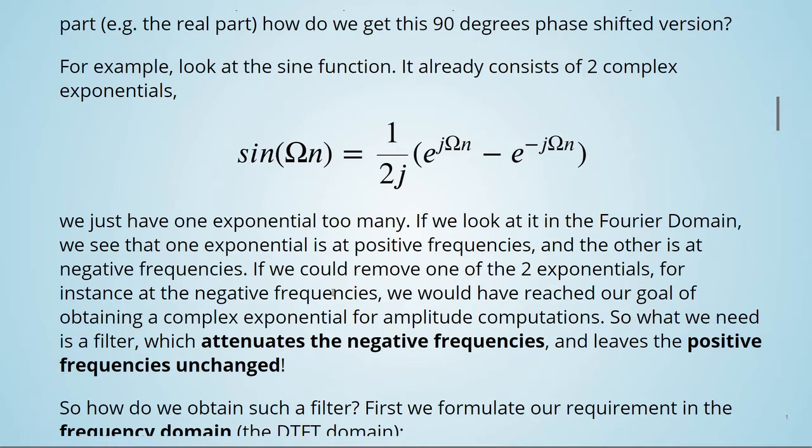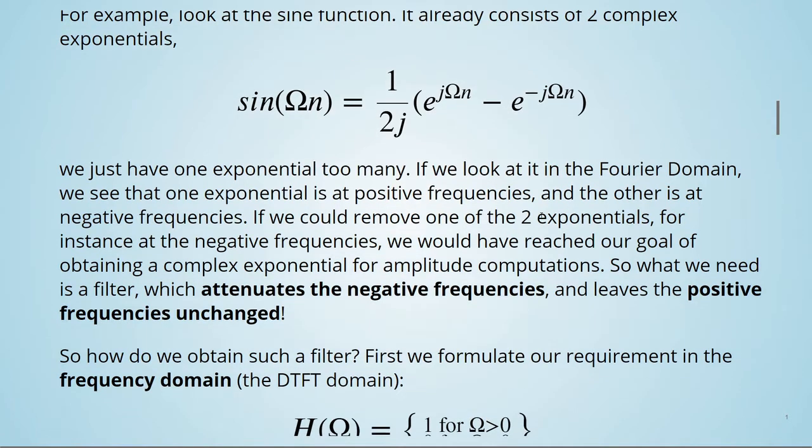If we could remove one of the two exponentials, for instance at the negative frequencies, we would have reached our goal of obtaining a complex exponential for amplitude computations. So what we need is a filter which attenuates the negative frequencies and leaves the positive frequencies unchanged.